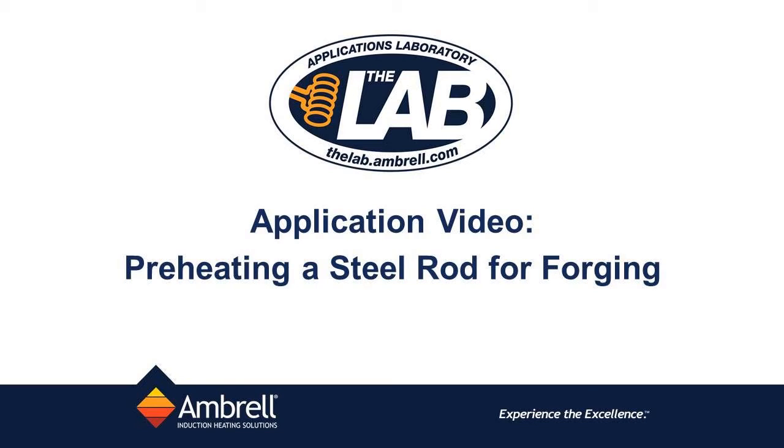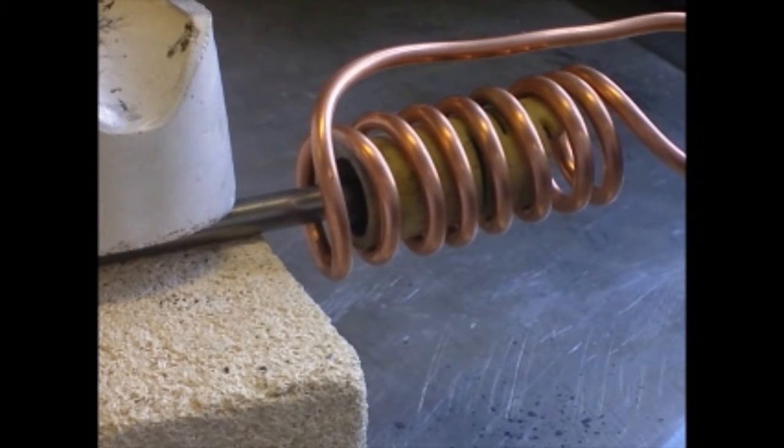Hello and welcome to another application video from the lab at Ambrell. In today's application video, we are heating a steel rod to 2,000 degrees Fahrenheit or 1,093 degrees Celsius for a forging application.